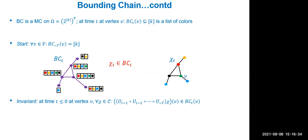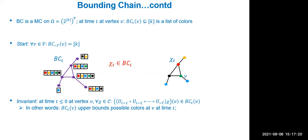For example, if chi_1 assigns blue, chi_2 assigns green, and chi_3 assigns yellow at some vertex, then the bounding chain's list at that vertex contains all three colors. This is the containment invariant: at any point during the CFTP run, whatever colors are assigned at each vertex by any coloring in the current image must be contained in the bounding chain's list at that vertex. This invariant must be maintained throughout.